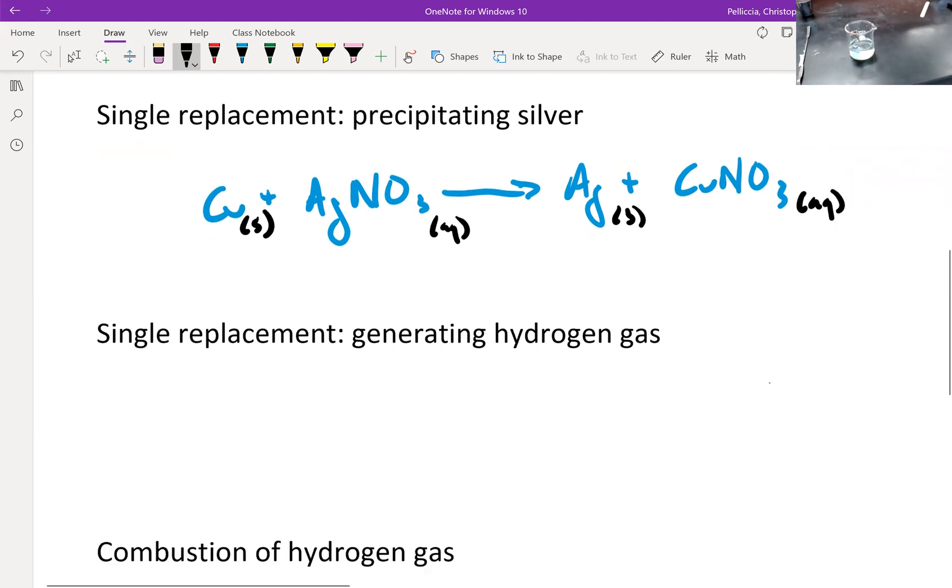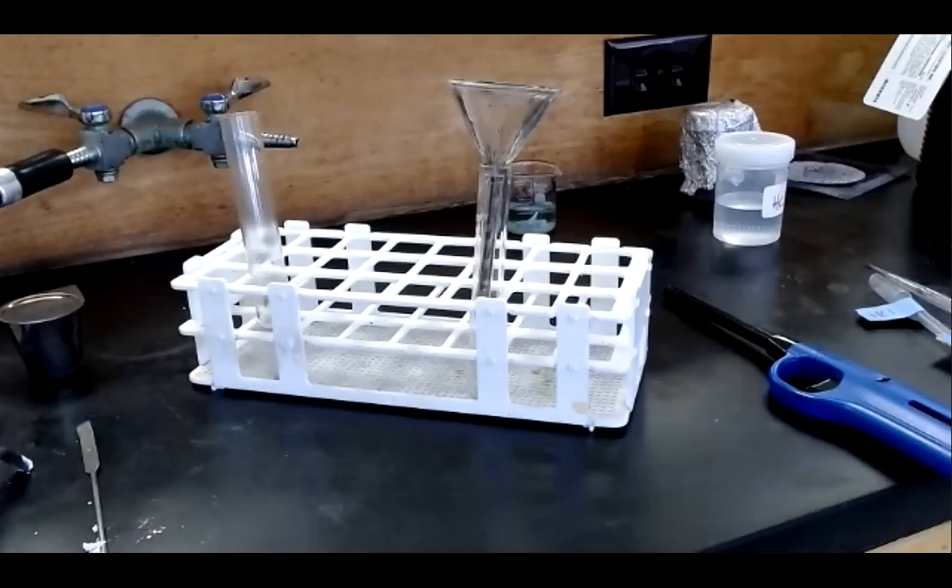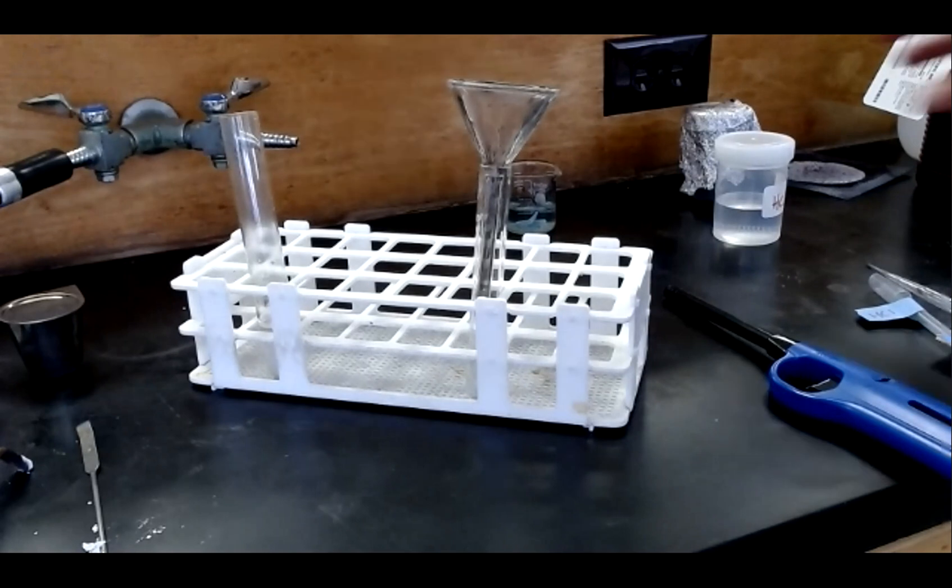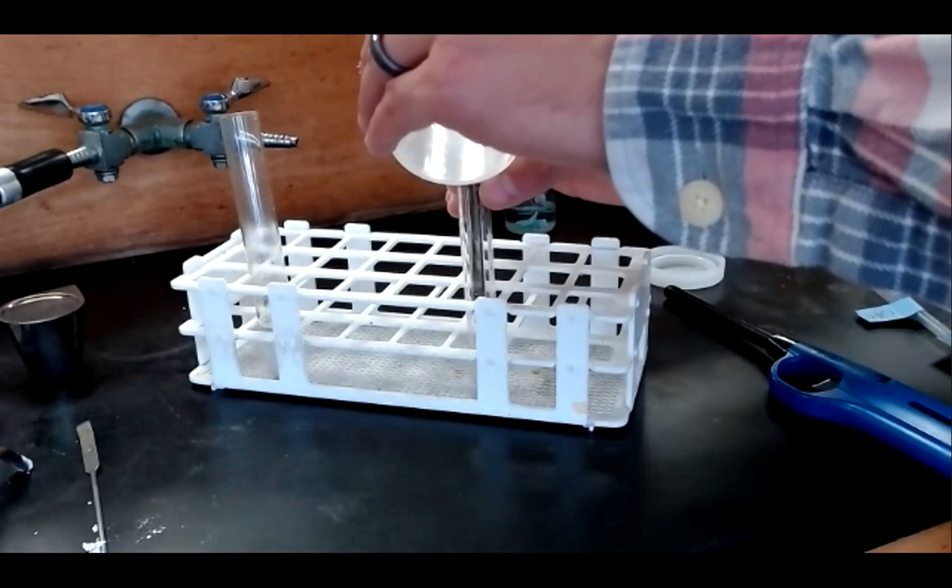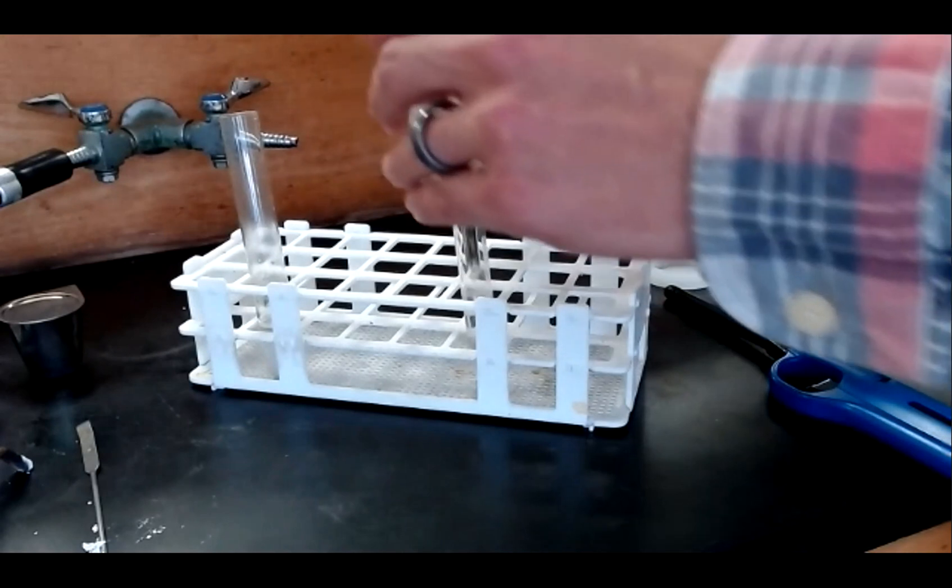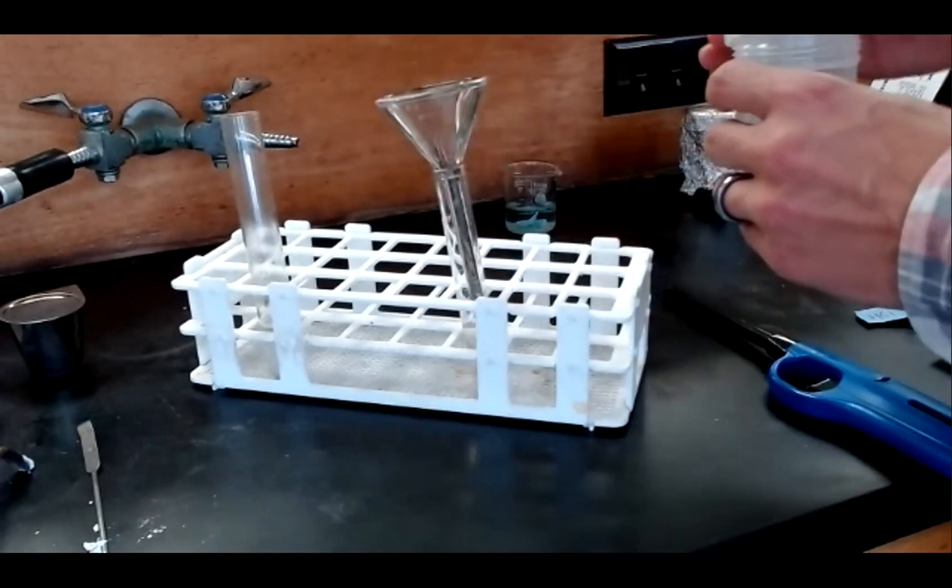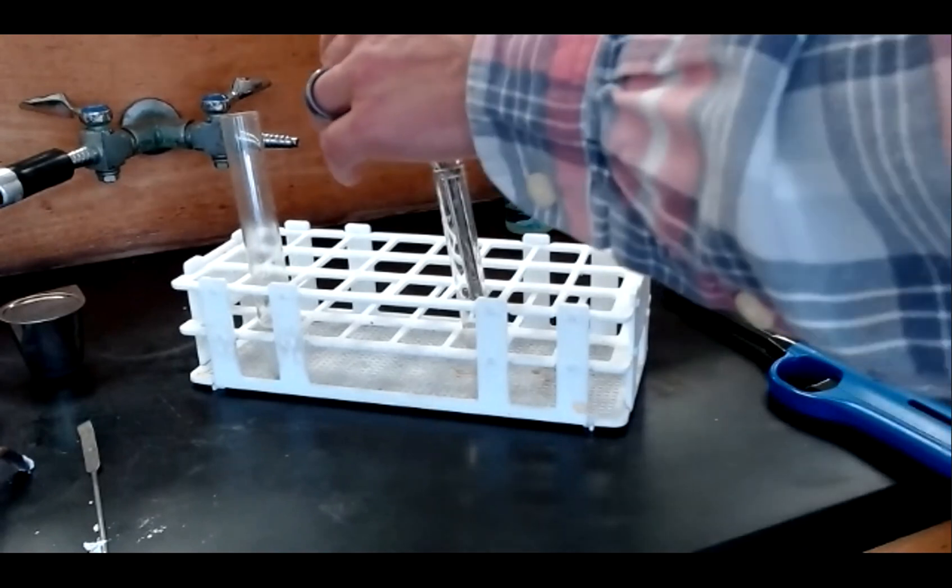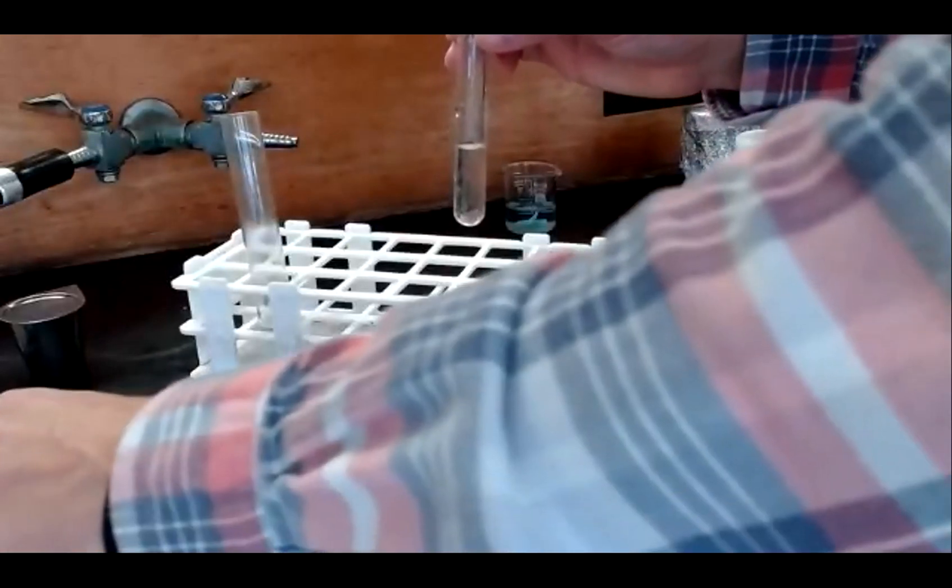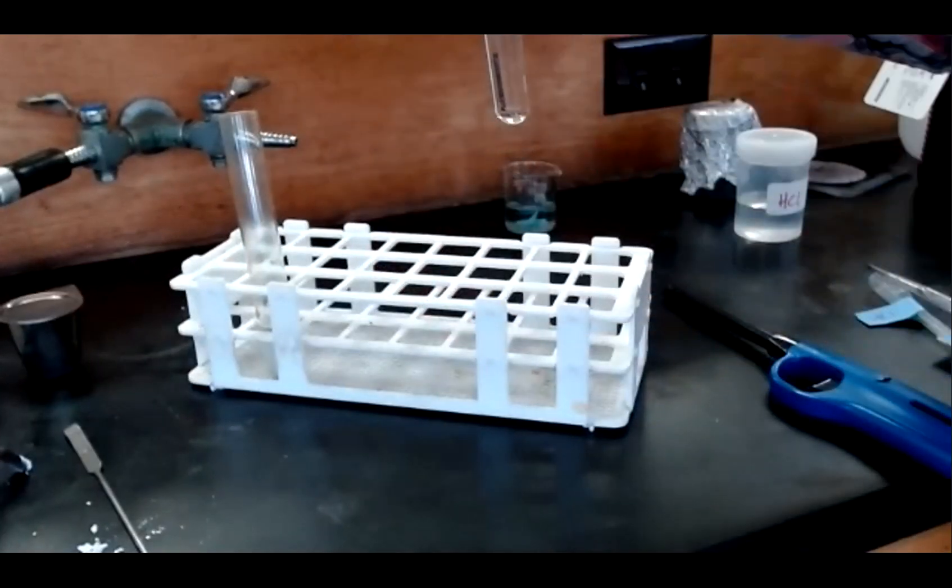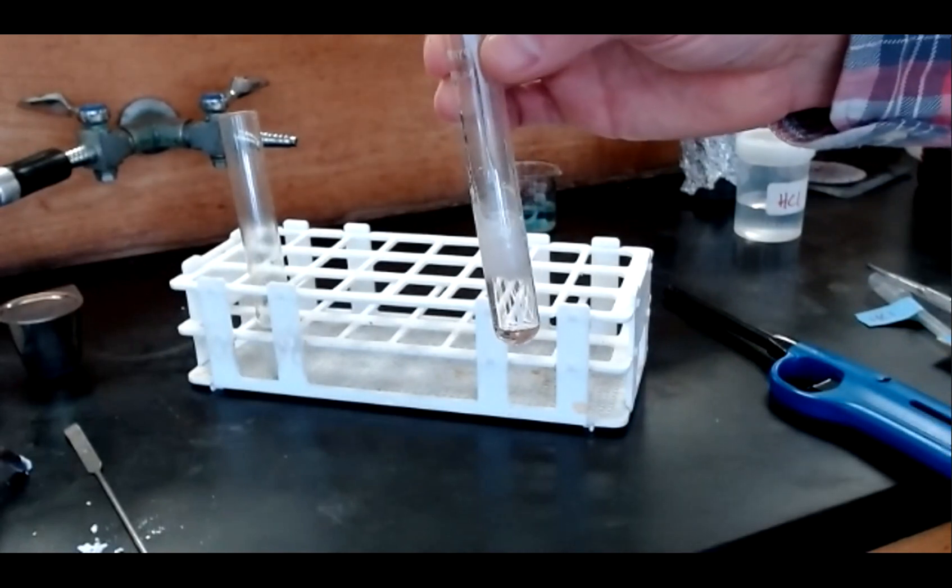A second single replacement reaction I'd like to show you is the generation of hydrogen gas. To generate hydrogen gas, I'm going to add hydrochloric acid to magnesium metal. So first I'll start by adding a small sample of hydrochloric acid to this test tube. Then I'm going to add a sample of solid magnesium metal. Here's my piece of solid magnesium. Put it in the test tube. Immediately you can see a vigorous reaction begin.